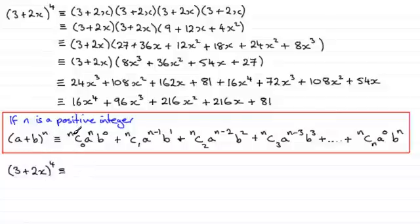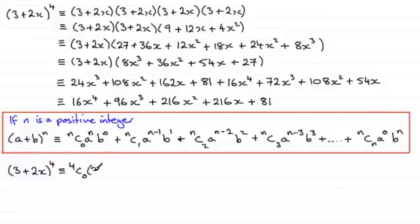So it's going to be 4C0 — we'll talk about this value in a moment — then it's a to the power n, so 3 to the power 4. Just put that in brackets: 3 to the power 4, and then it's multiplied by b, which is (2x) to the power 0. So that's the first term.